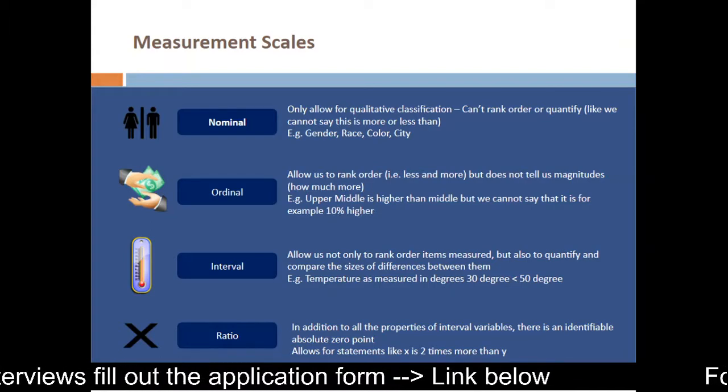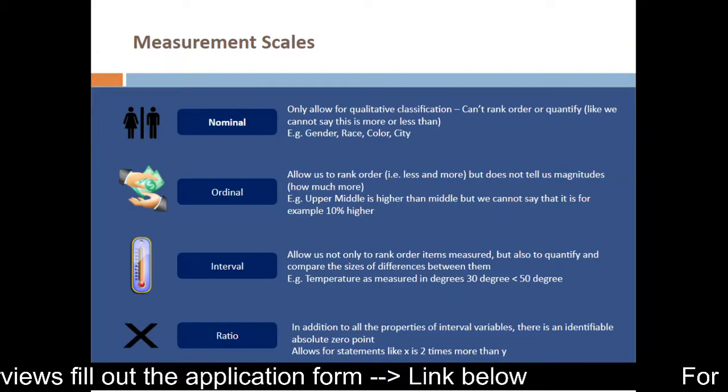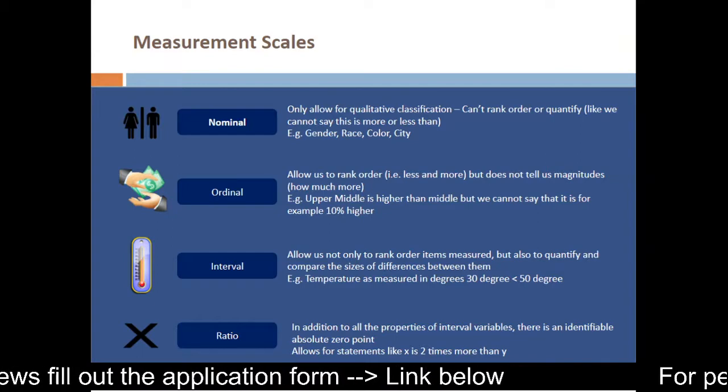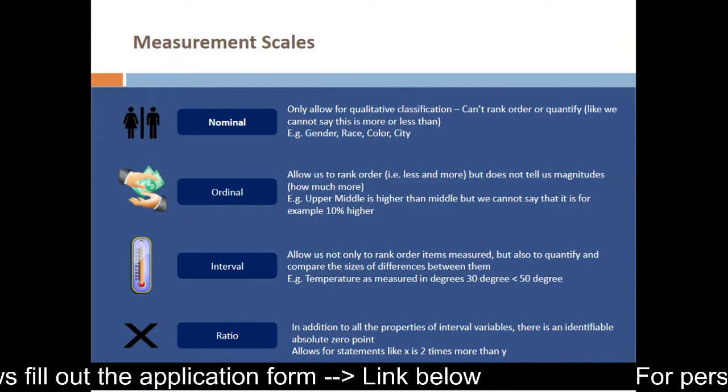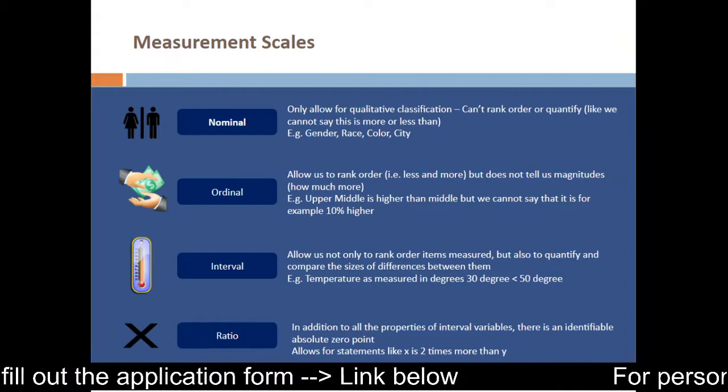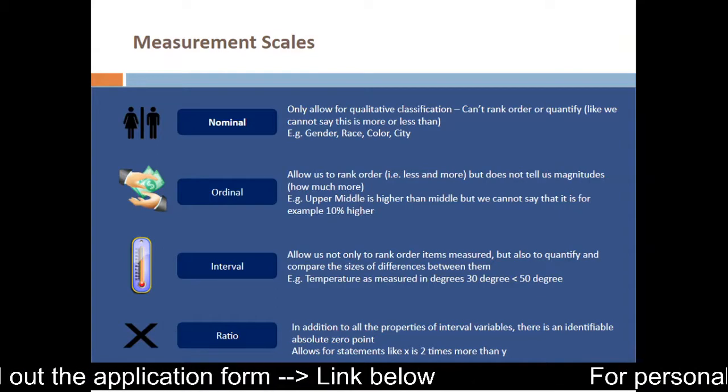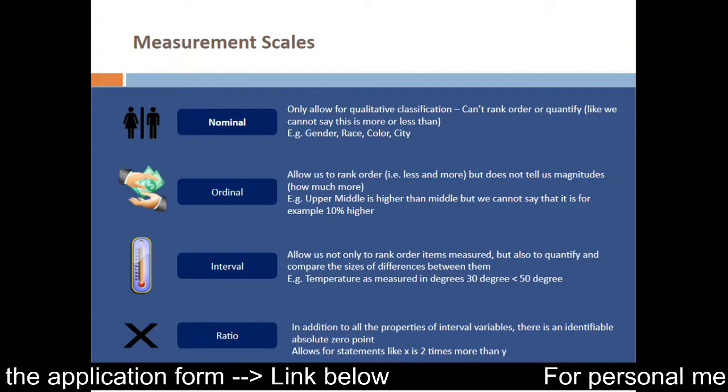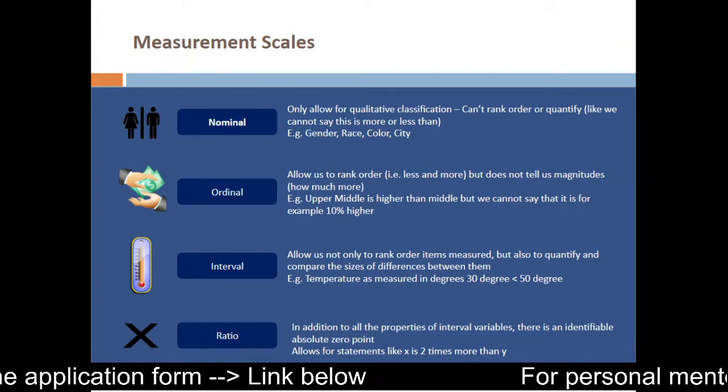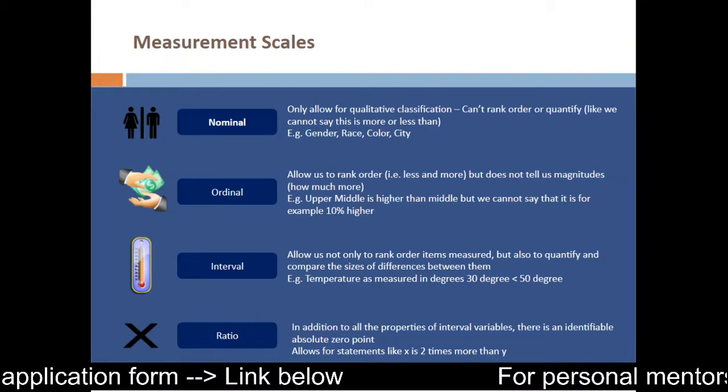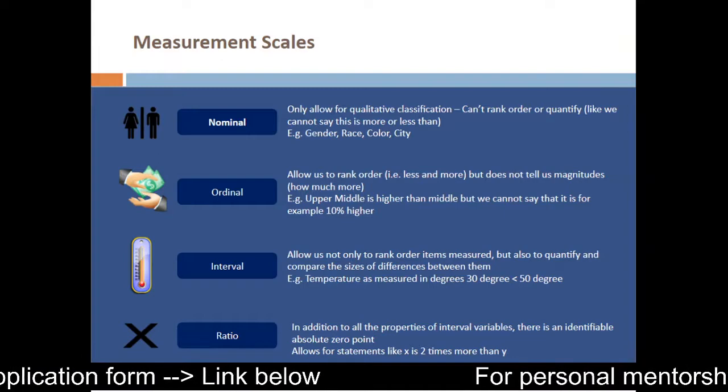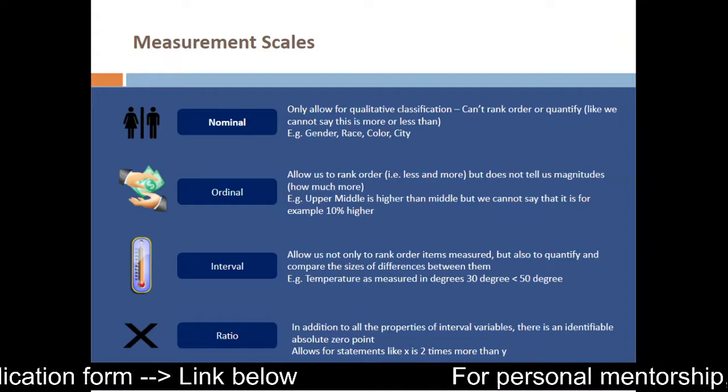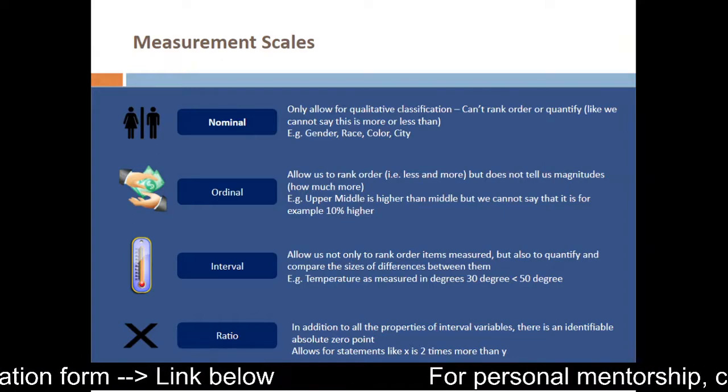If you are looking at upper middle class and trying to say that upper middle class as a section of the population is 10 percent or 20 percent higher than the middle class, we cannot really come up with a conclusion like that. So those kind of variables where we have a clear segmentation among the different groups in a population is ordinal. We cannot really measure how much more or less it is compared to anything else.